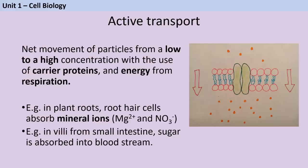The third transport process is active transport — think of it as the opposite of diffusion, because it's the overall movement of particles from a low concentration to a high concentration. This requires both carrier proteins and energy from respiration, so tissues that do a lot of active transport will have lots of mitochondria. We see active transport in plant roots, where root hair cells absorb mineral ions like magnesium and nitrates, and in the villi of the small intestines where sugar is absorbed into the bloodstream. In both cases it allows the organism to absorb over 50% of the available nutrients — more than they could get via diffusion alone.